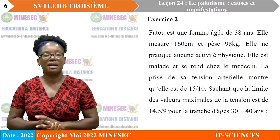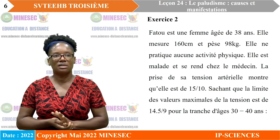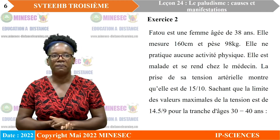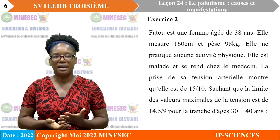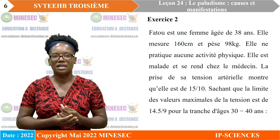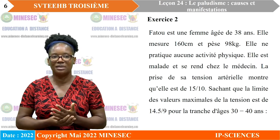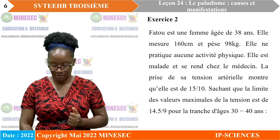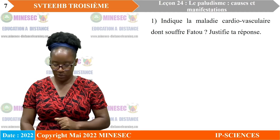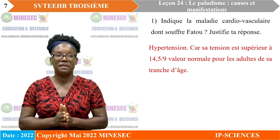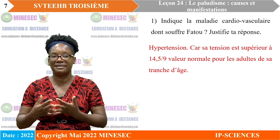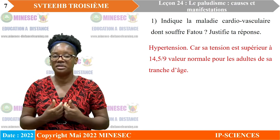Exercice 2 : Patou est une femme âgée. Elle mesure 1,60 mètres et pèse 88 kg. Elle ne pratique aucune activité physique. Elle est malade et se rend chez le médecin. Sa tension artérielle est de 15/10. Sachant que les valeurs maximales normales sont de 14 et de 9 pour la tranche d'âge 30-40 ans, il s'agit ici de l'hypertension, car la tension de Patou est supérieure aux valeurs normales.